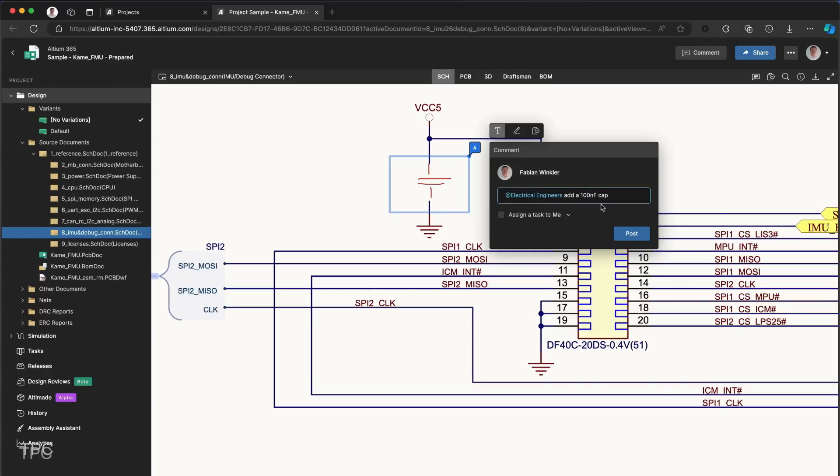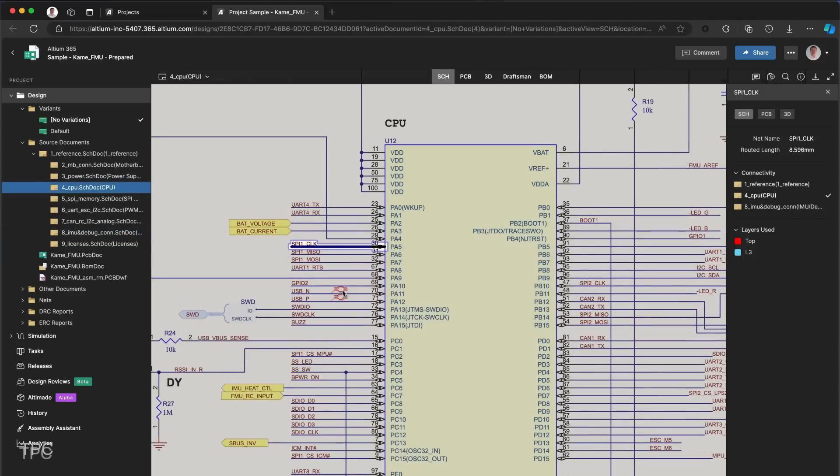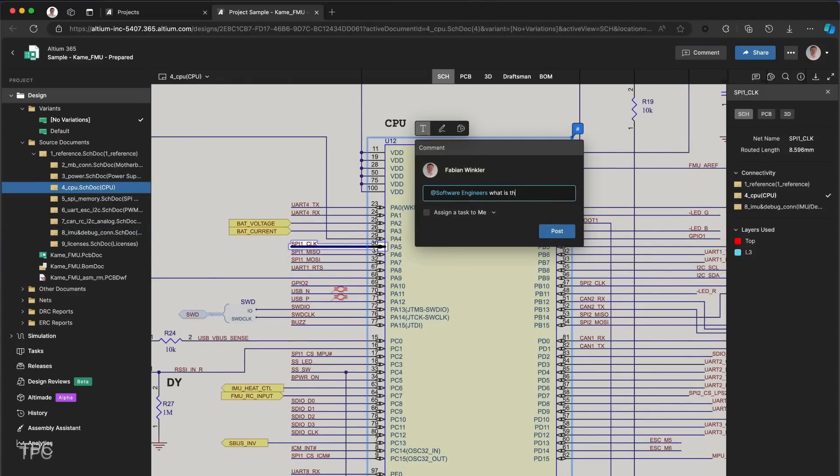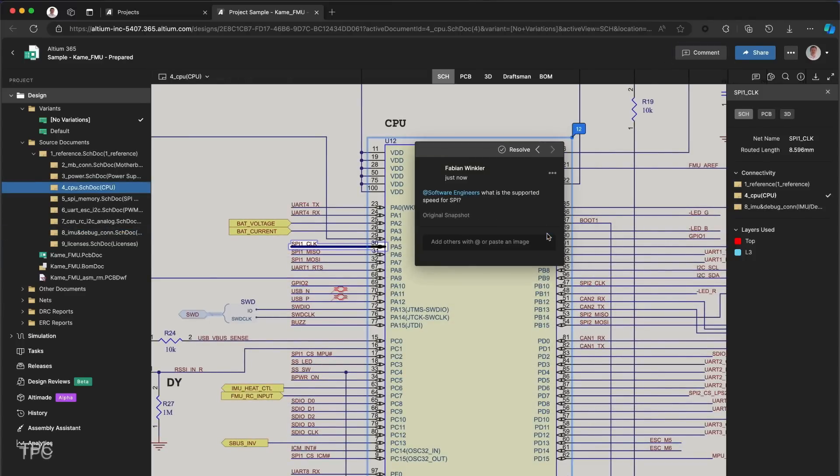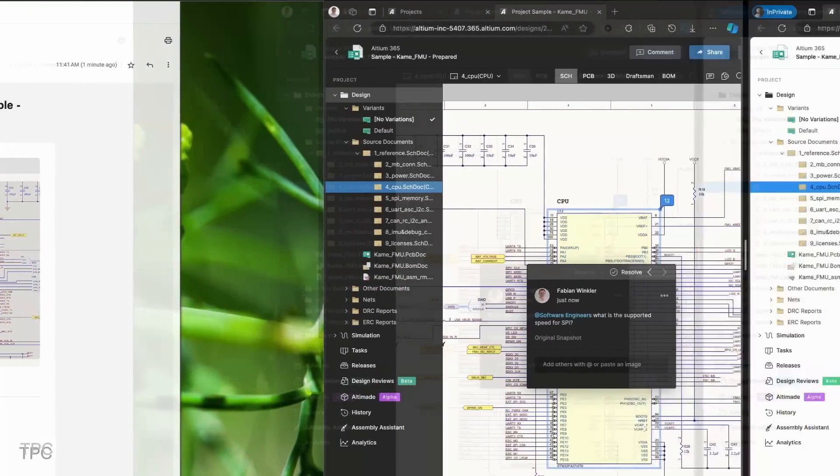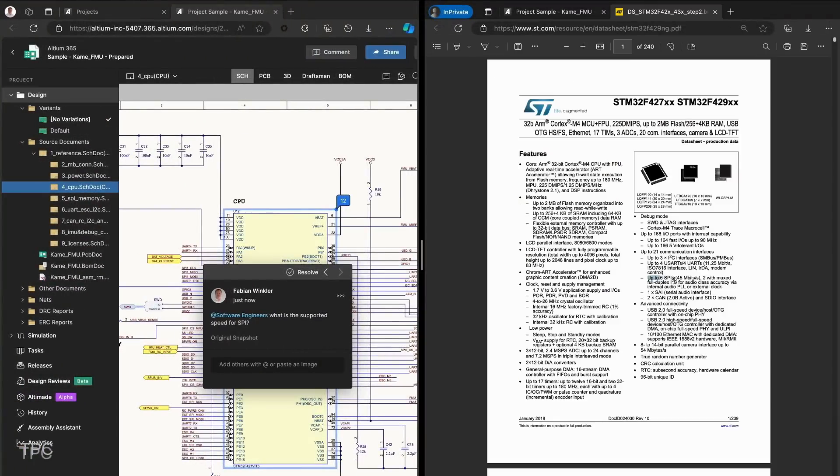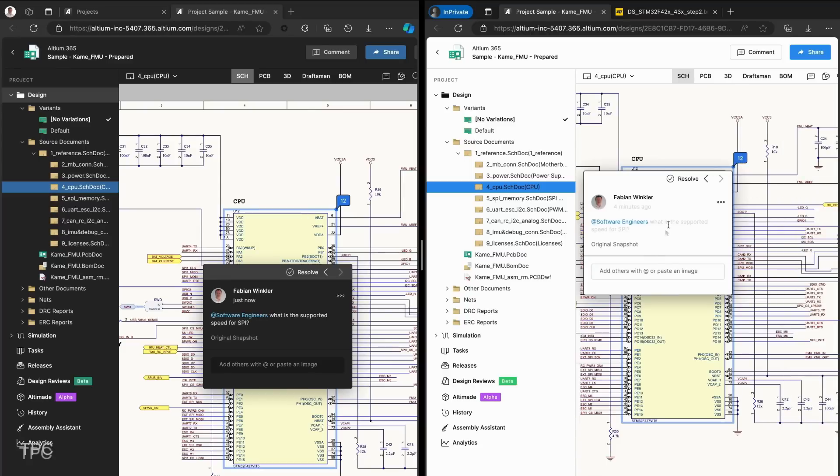Members can view, edit, and comment in real-time, streamlining collaboration. Need input from a software engineer? They'll get notified and can take action right away with easy access to datasheets and materials. You can even send your design directly to the manufacturer, simplifying the process and boosting workflow efficiency.